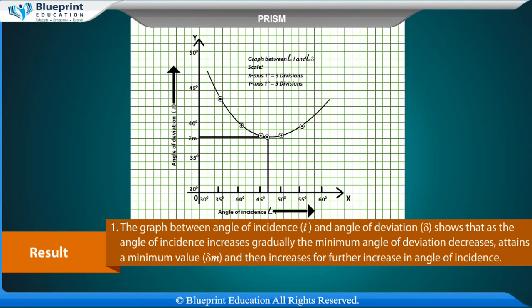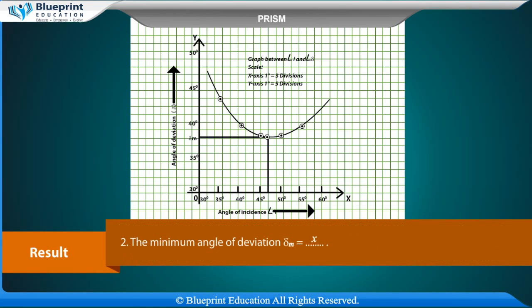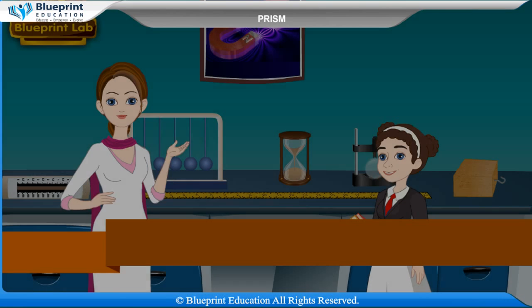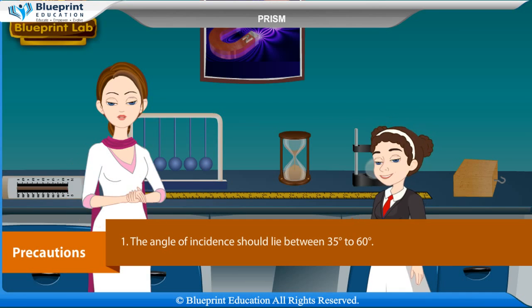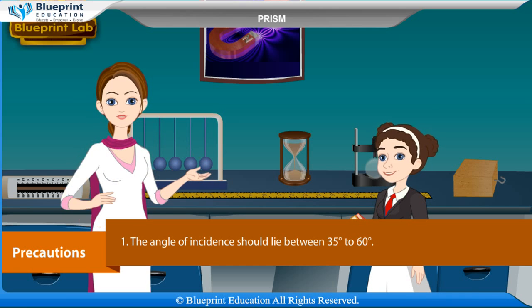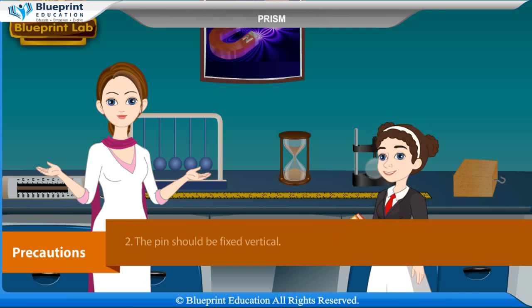Result: The graph between angle of incidence (i) and angle of deviation (δ) shows that as the angle of incidence increases gradually, the angle of deviation decreases, attains a minimum value δm, and then increases for further increase in angle of incidence. The minimum angle of deviation δm and the refractive index μ of the material of the prism are determined from the graph.